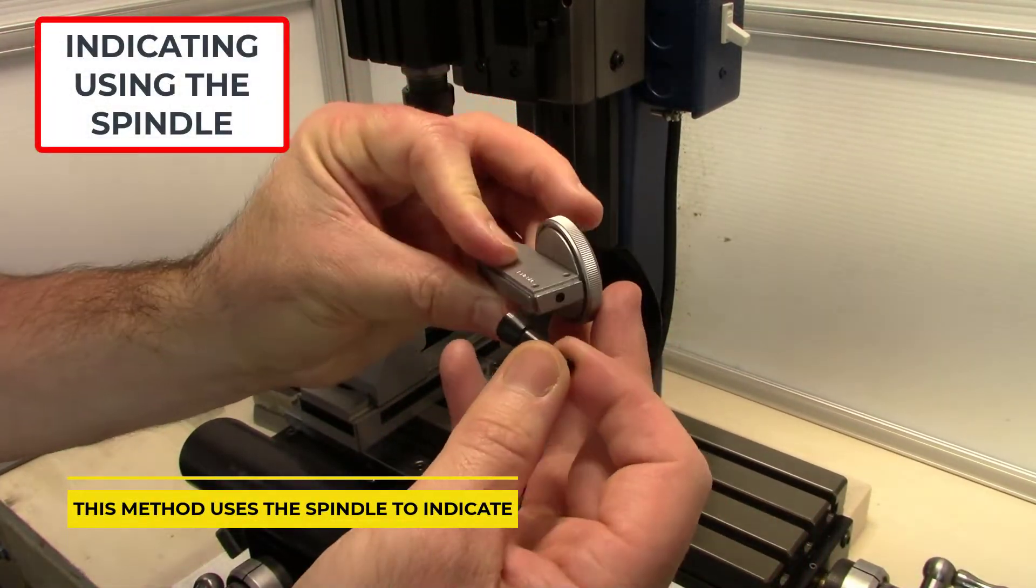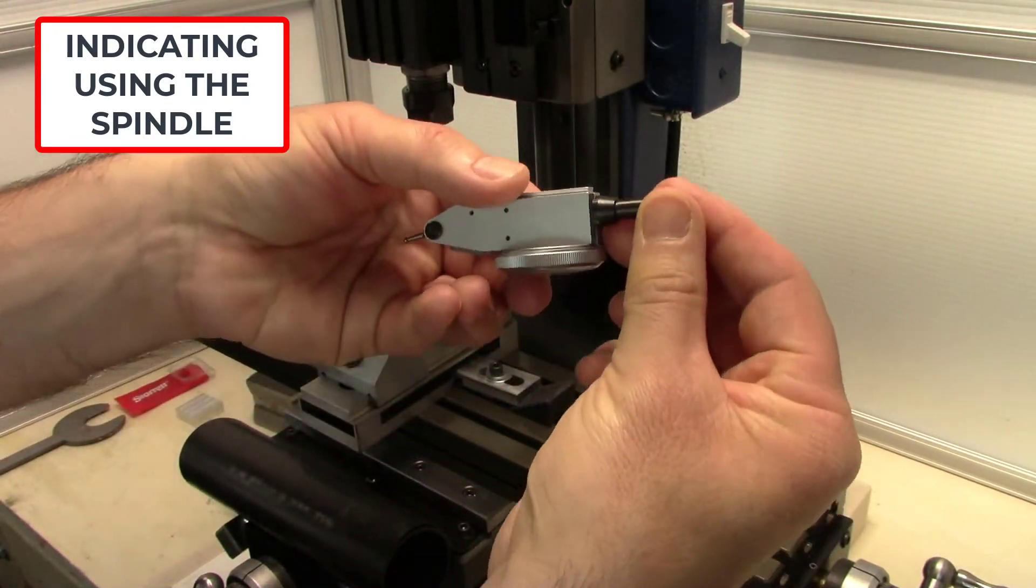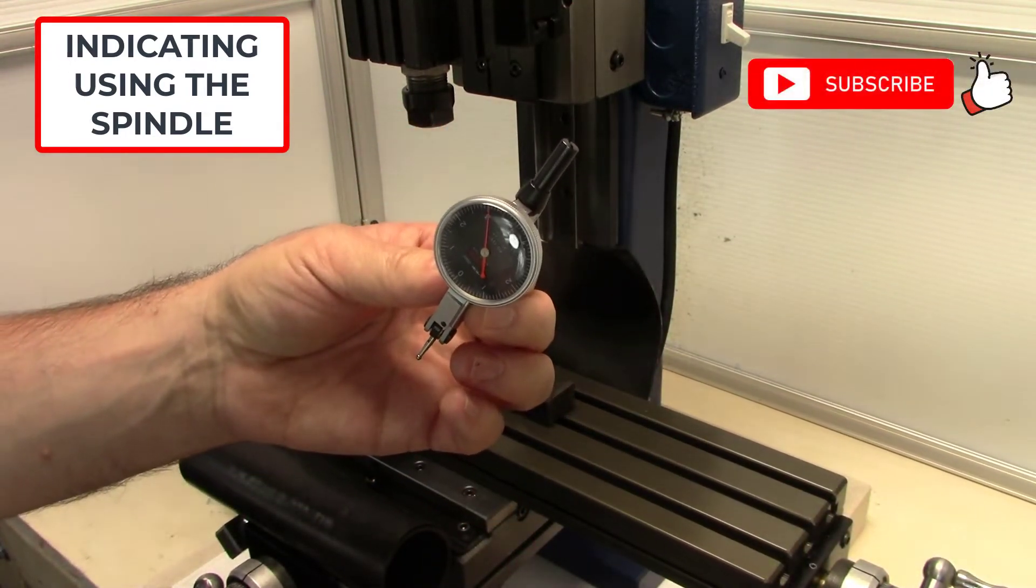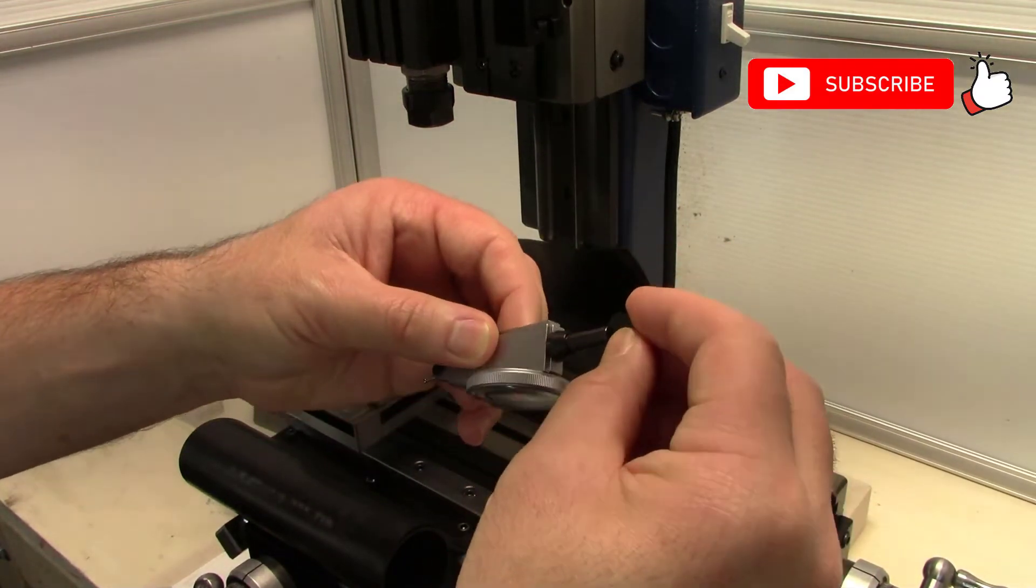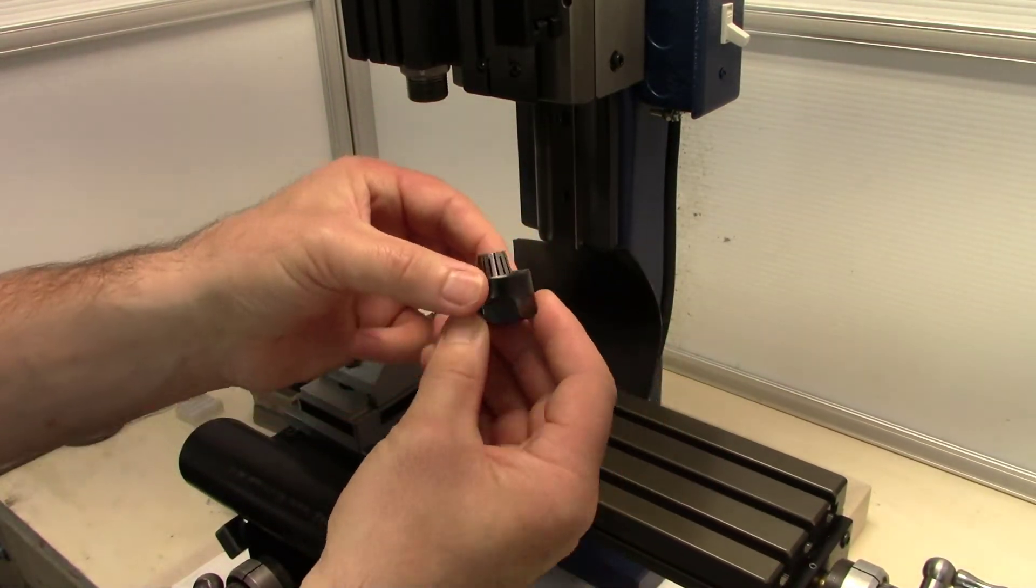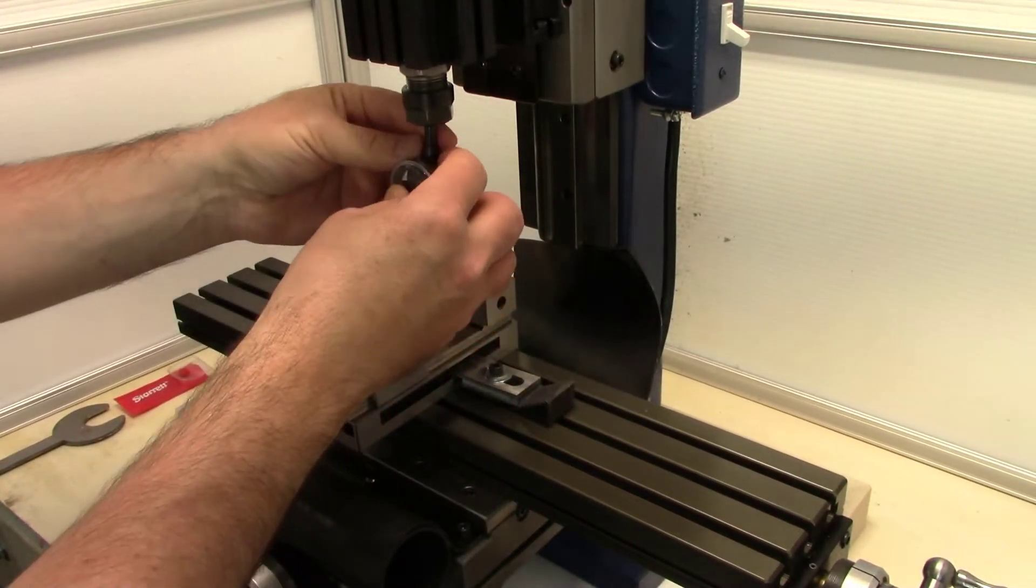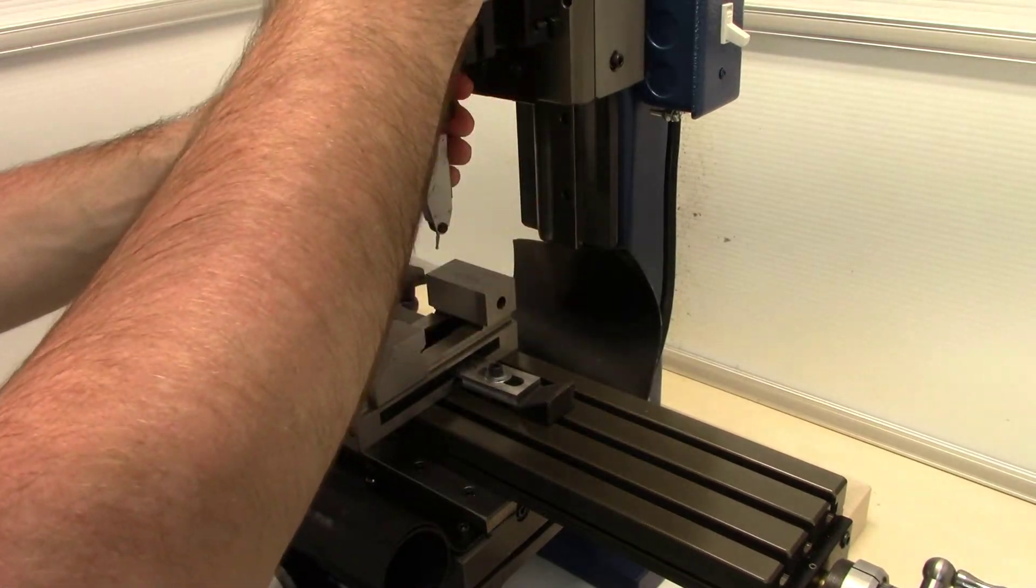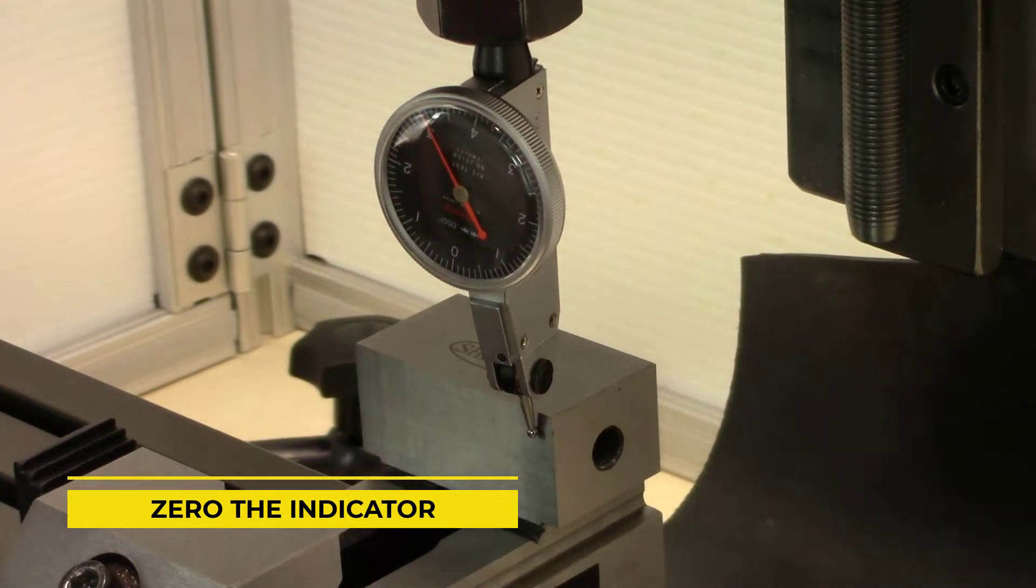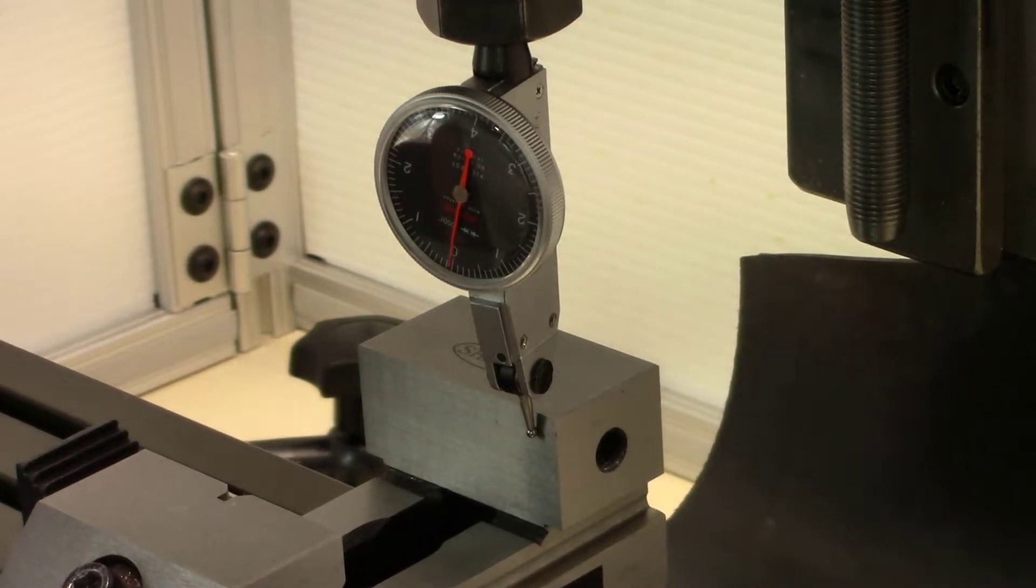Here we'll use a dovetail swivel clamp and we'll attach it to the indicator. We'll use an ER-16 collet and insert our indicator into the headstock. We'll zero out our indicator using the y-axis, then we'll sweep our face.